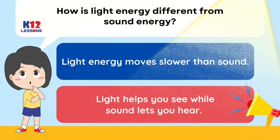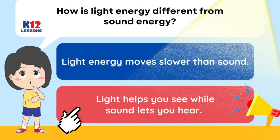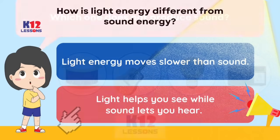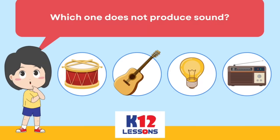How is light energy different from sound energy? Light energy moves slower than sound. Light helps you see while sound lets you hear. Which one does not produce sound? Drum. Guitar. Light bulb.